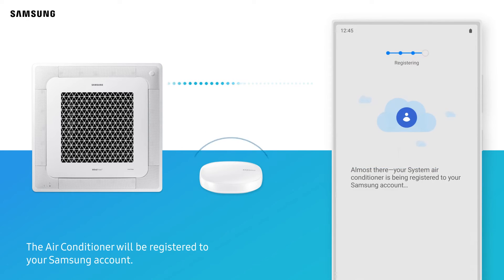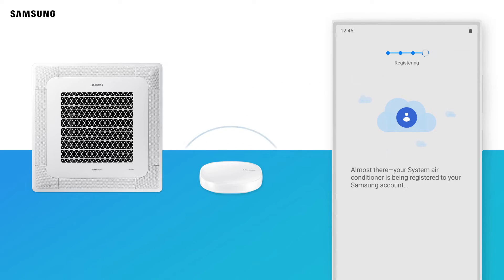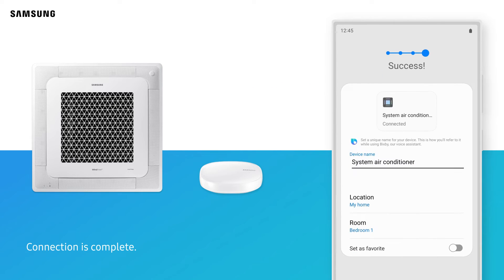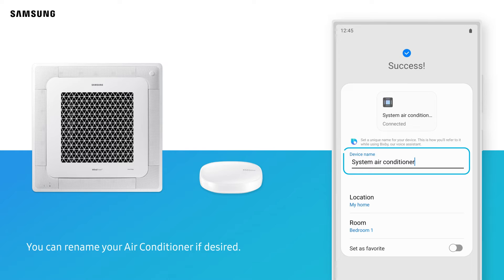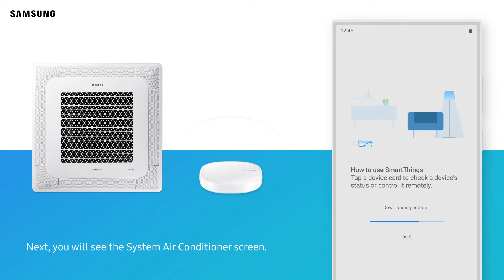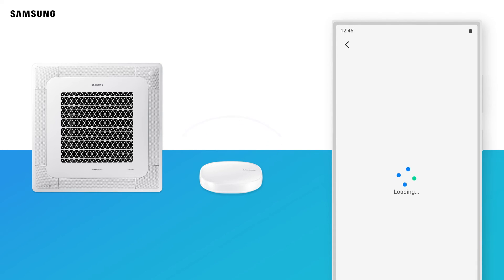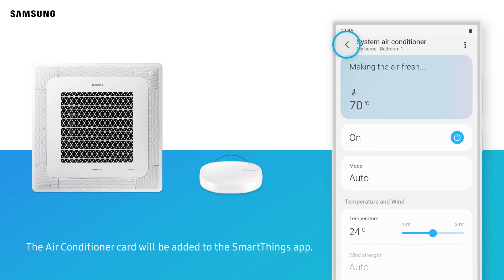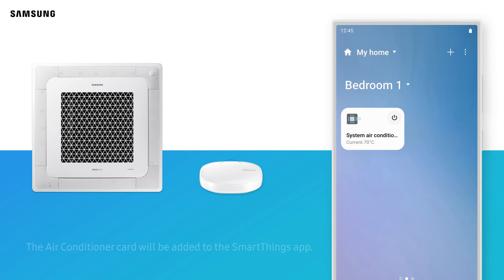The air conditioner will be registered to your Samsung account. Connection is complete. You can rename your air conditioner if desired. Tap Done. Next, you will see the system air conditioner screen. The air conditioner card will be added to the SmartThings app.